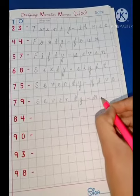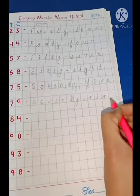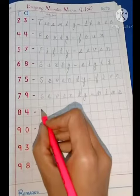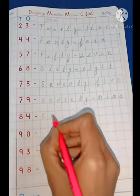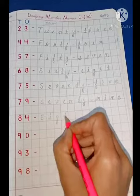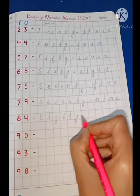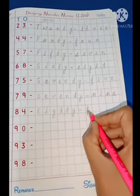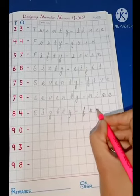N-I-N-E, seventy-nine. Next is 84: E-I-G-H-T-Y, eighty-four, F-O-U-R, eighty-four.